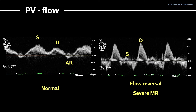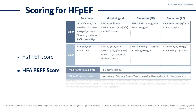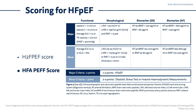Those are all signals from transesophageal echo, where you can mostly get a way better image compared to the transthoracic approach. Moving on, we can also do a scoring for heart failure with preserved ejection fraction, where diastolic dysfunction plays an essential role. There are two scores I want to mention: the H2-FPEF score and the HFA-PEF score, seen on the right-hand side.